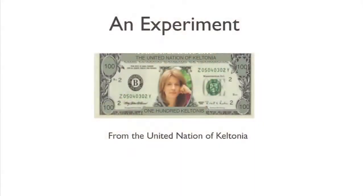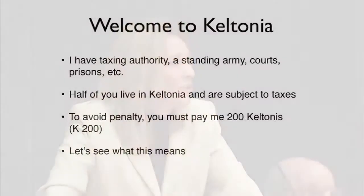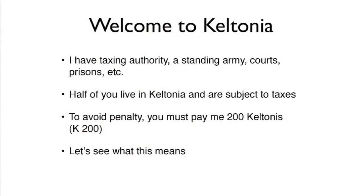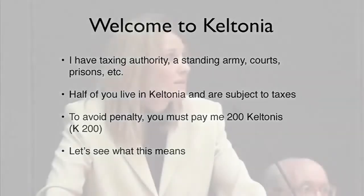I want to do an experiment. This is my world now, my country — or half of you are going to be my country. This is the country of Keltonia. I am the government. I have the taxing authority, a standing army, courts, prisons, and so forth. Half of you are my domestic private sector — the households and businesses in the nation of Keltonia. You're all subject to a tax: 200 keltones, you have to pay me 200 keltones this year.